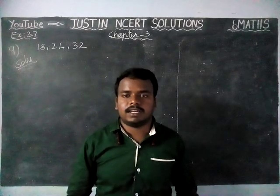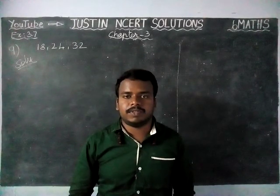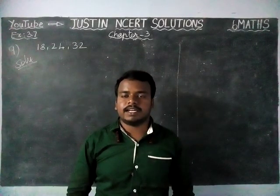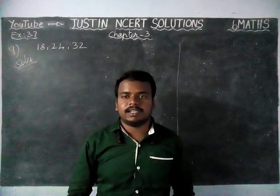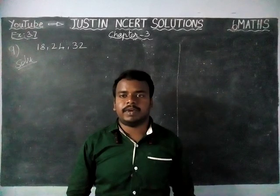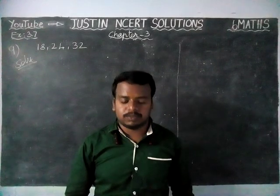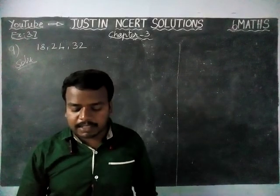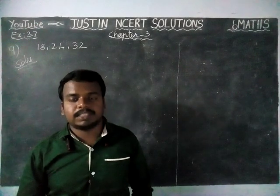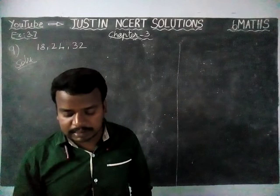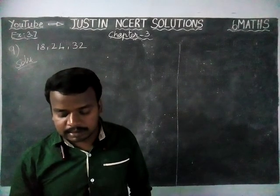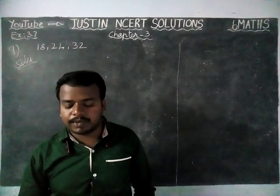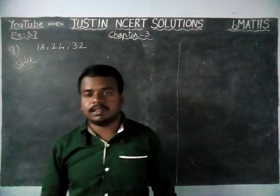Hi students, welcome to Justine NCIT Solutions. In this video we are going to see Class 6 Maths Chapter 3 Exercise 3.7, 9th Question. The question is: Find the smallest 4-digit number which is divisible by 18, 24 and 32.